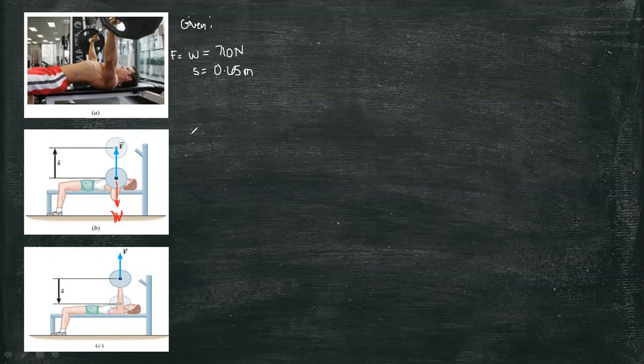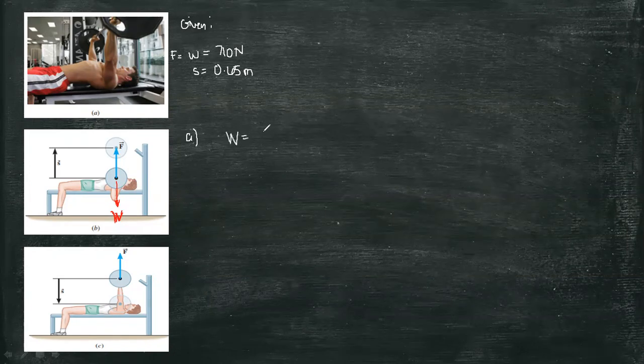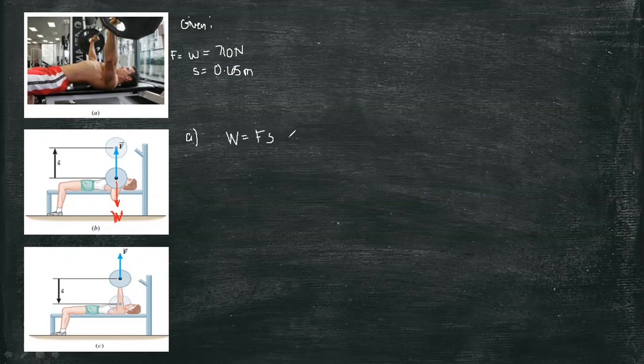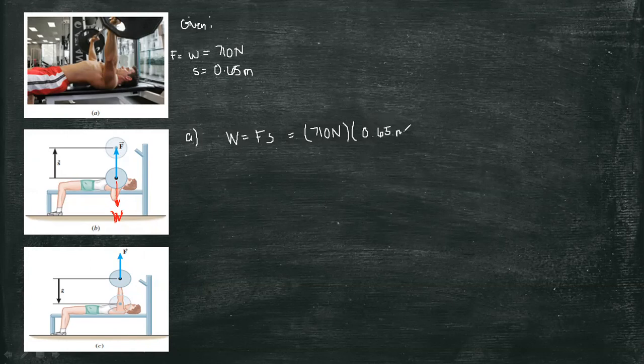Let's find the work applied at the lifting phase. Work is equal to force times displacement, so the force being applied in lifting phase is 710 newton, and the distance or displacement that made in lifting is 0.65 meter. So the answer is 461.5 joules.